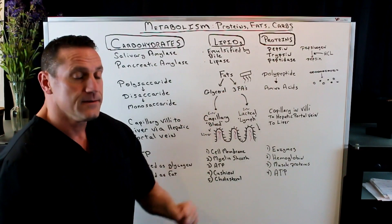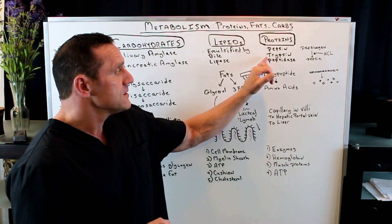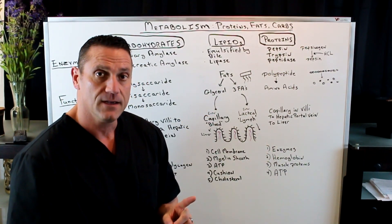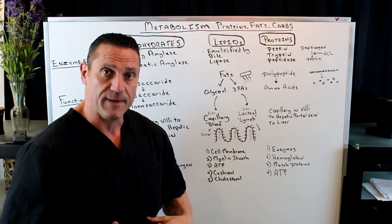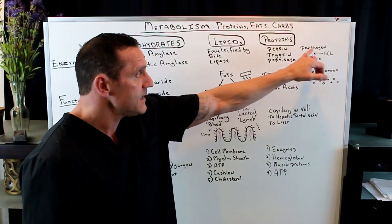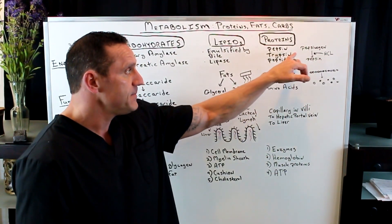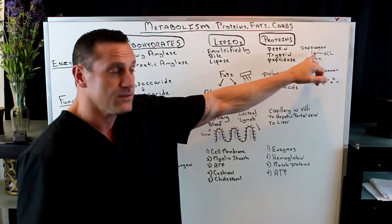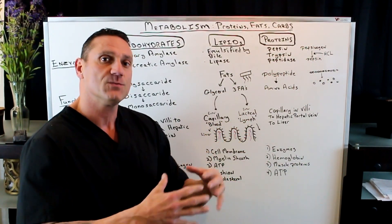Now proteins. The enzymes are pepsin, trypsin, and peptidase — the main one is pepsin. So protein digestion begins where? In the stomach. Now, anytime you see -ogen, that means stored. Here it's pepsinogen. Pepsinogen is converted to the active form of pepsin through hydrochloric acid, and that starts to break down the proteins in the stomach.